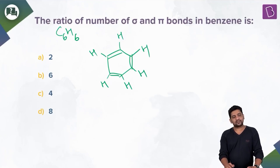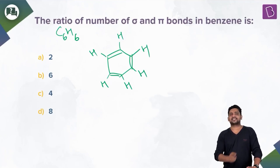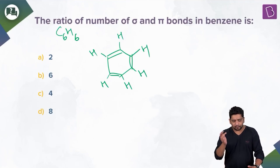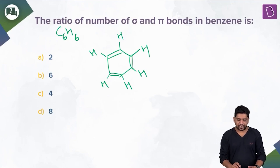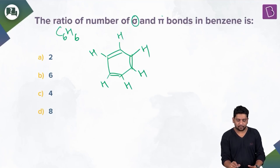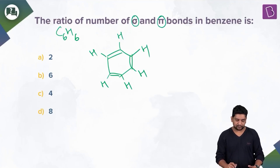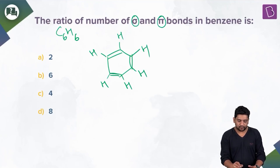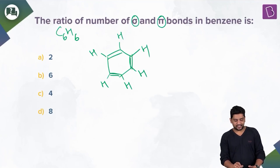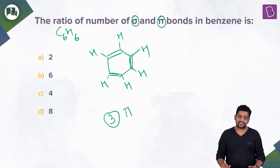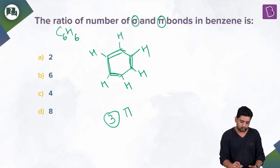This isn't the actual resonance-stabilized structure of benzene, but let's work with it. There is one pi bond here, one here, one here — so three pi bonds in total.